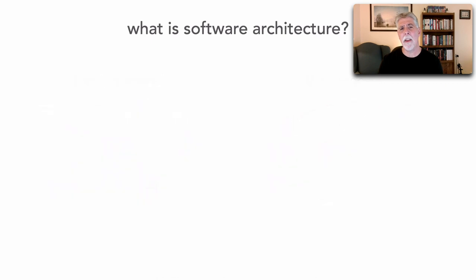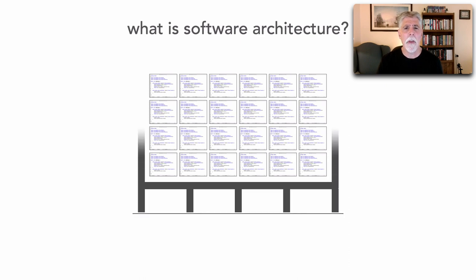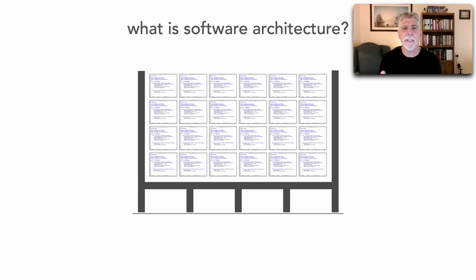This is my take and definition of what software architecture is. It really consists of four main dimensions from a structural aspect, because this is all of your source code. I like to think of architecture as the thing holding up all of that source code, and there are four dimensions that make up this overall structure.